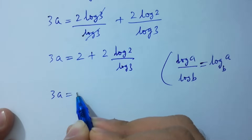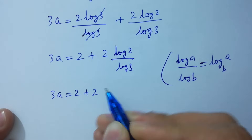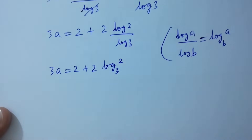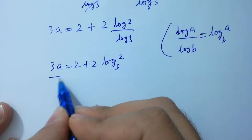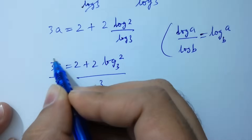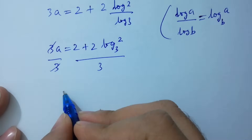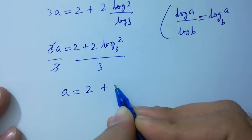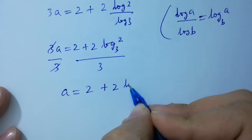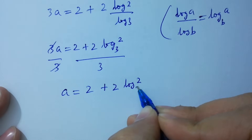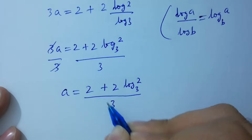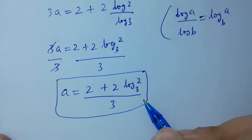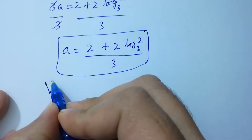3a equals 2 plus 2 log 2 to the base 3. Dividing both sides by 3, we get a equals (2 plus 2 log₃2) over 3. That is the value of a. Now verify.